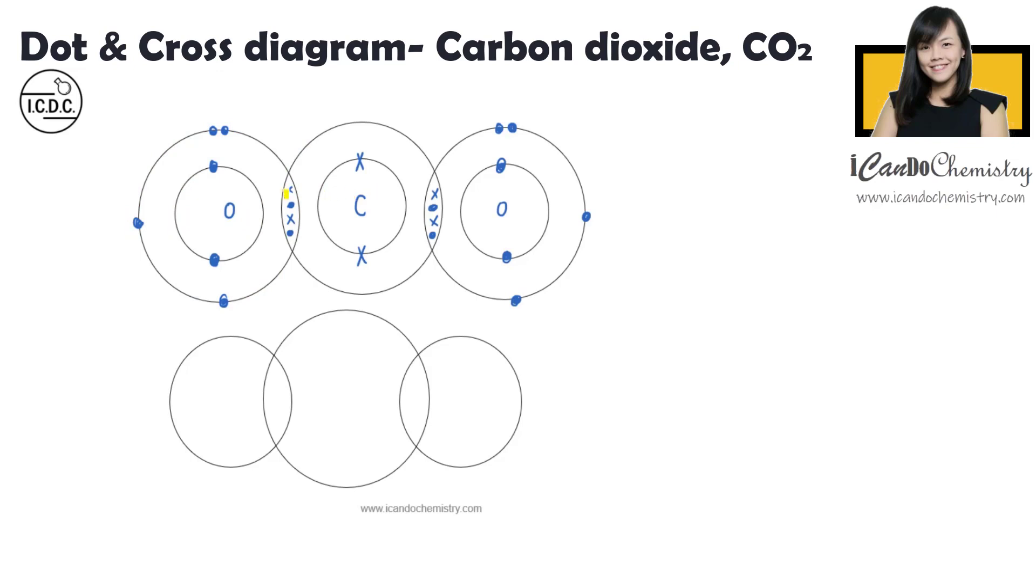What about the carbon in the middle? We've got four, five, six, seven, eight over here. Good for carbon. What about the oxygen on the right hand side? Four here, five, six, seven, eight. So each of them has attained the electronic configuration that they want.